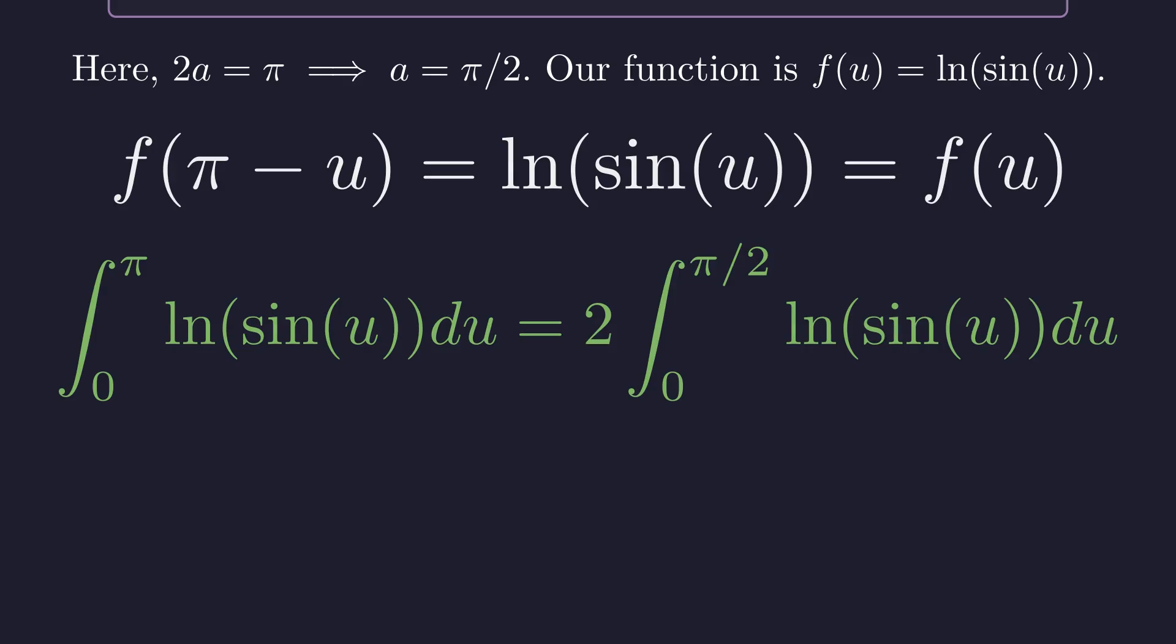This allows us to apply the property, rewriting the integral from zero to pi as twice the integral from zero to pi over 2. And look at that. This resulting integral is exactly our original integral i. The variable of integration, whether it's u or x, doesn't change the value of the definite integral.